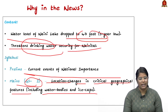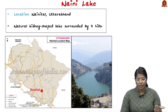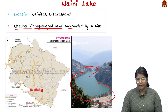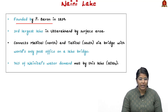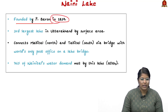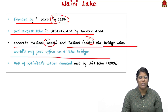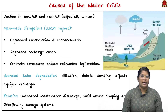Naini Lake is located in Uttarakhand, as visible on the map. It is a natural kidney-shaped lake surrounded by seven hills. It was found by Baron in 1839 and is the third largest lake in Uttarakhand by surface area. It connects Mallital in the north and Tallital in the south through bridges, with the world's only post office on a lake bridge. As per 2024, this lake meets 76% of Nainital's water demand, which is why the current crisis is very concerning.